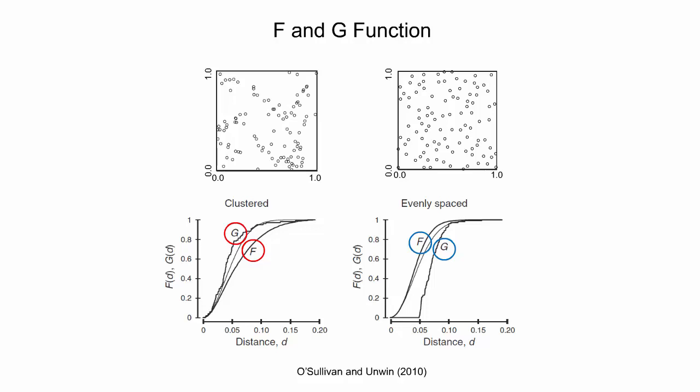The important difference between the two shown point patterns is the reversed relationship between the f and g functions. In addition to the observed f and g functions, the expected values of these functions under complete spatial randomness are also visualized as a separate function. The f and g functions have the same expected curve, so only one additional curve is shown in each diagram. Comparison of observed and expected functions provides information on how unusual the observed pattern is, and it can be seen that the f and g functions lie on opposite sides of the expected curve in each diagram, revealing their different nature in characterizing an observed point pattern.